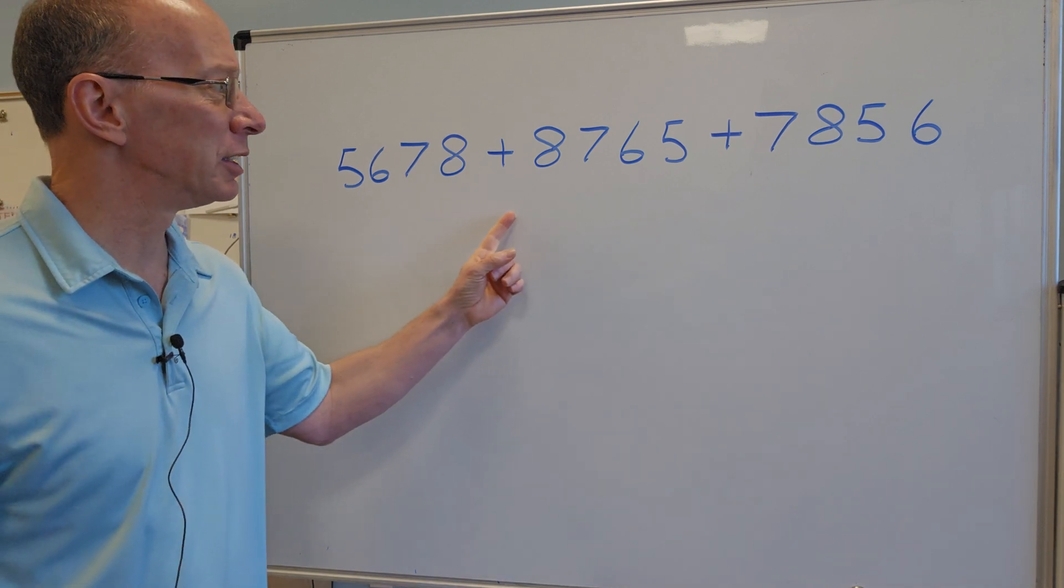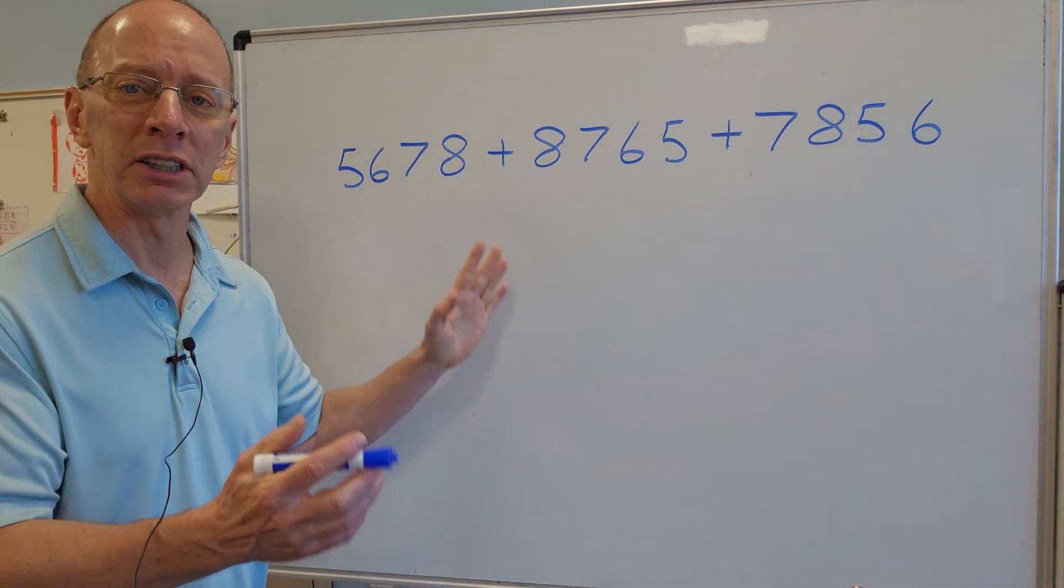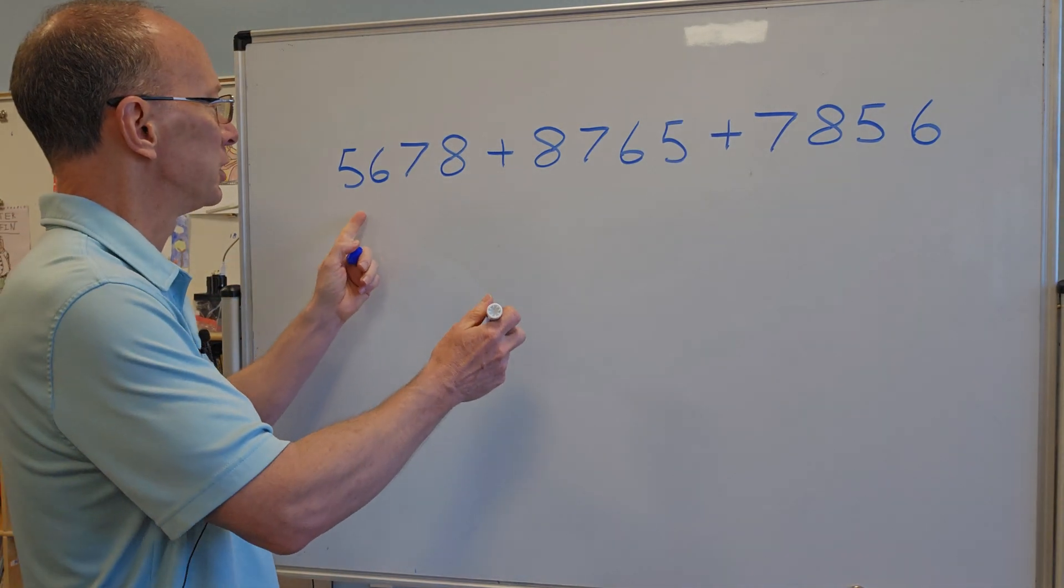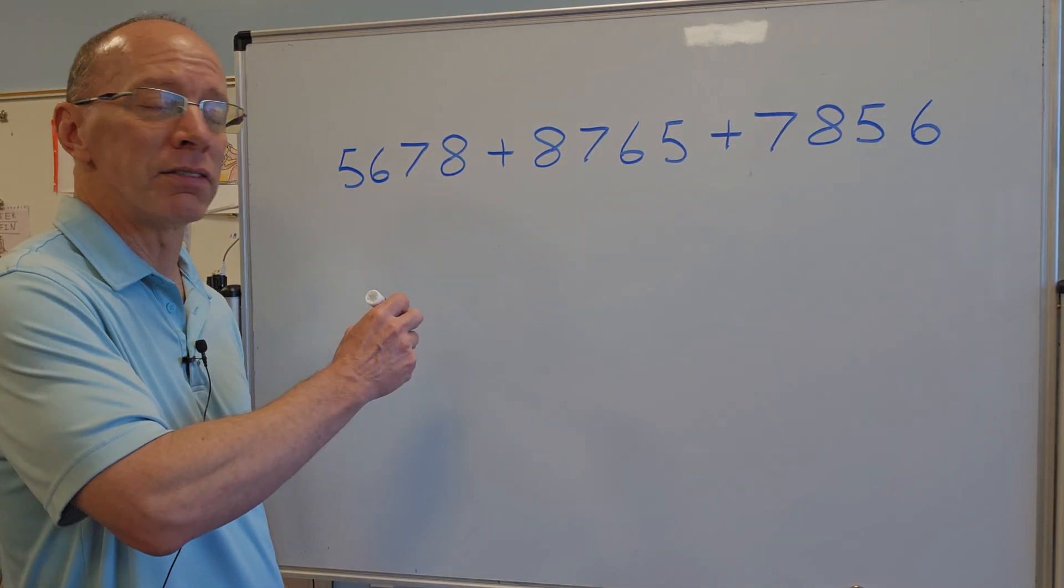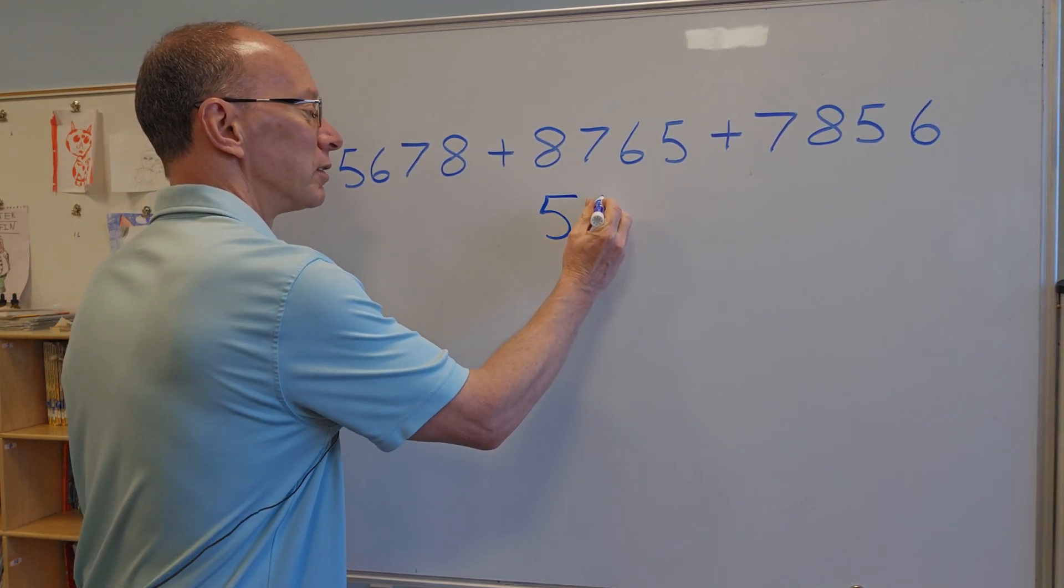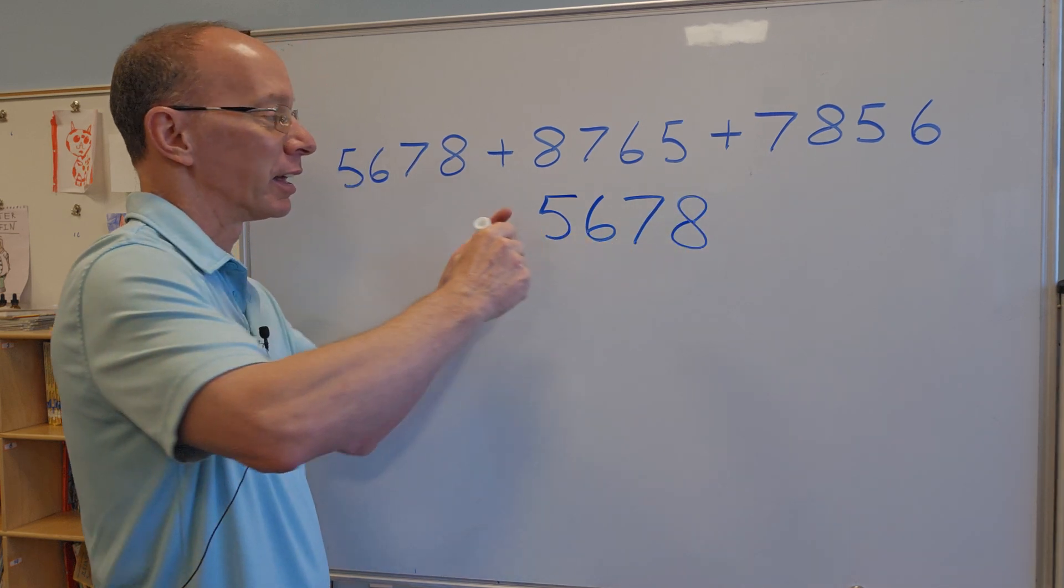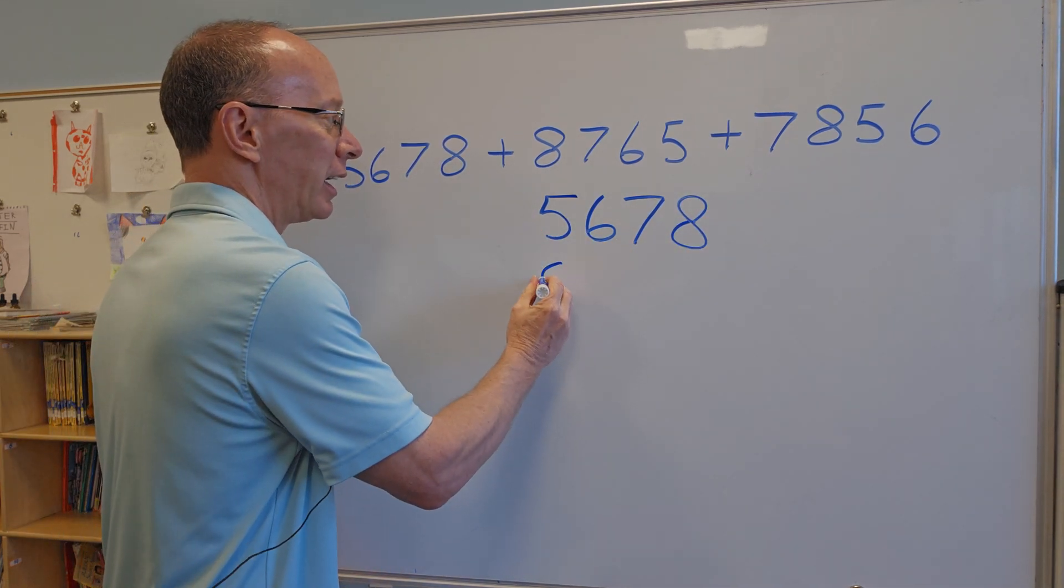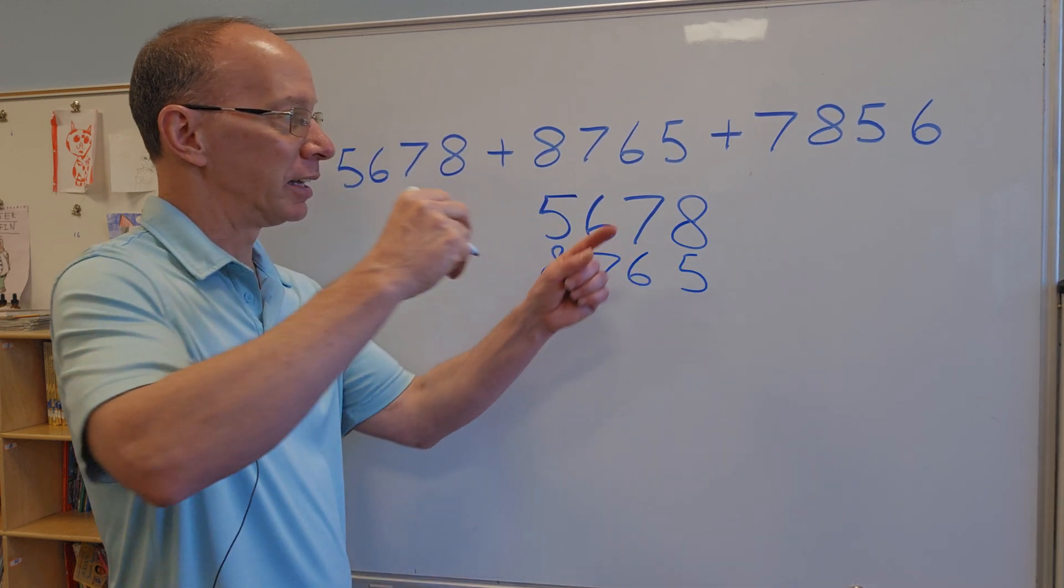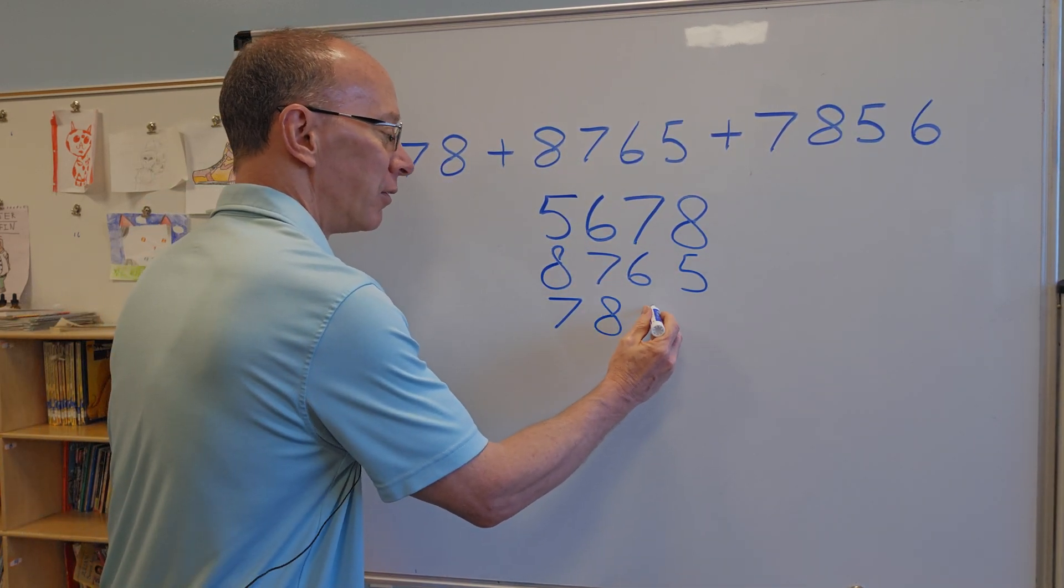So let's go ahead and do this problem right here. Whenever I do a big problem like this with a bunch of numbers, I like to always rewrite it. So I'm going to go ahead and just write the number 5,678. Now I'll write the next number right here, 8,765. And then the last one is 7,856.